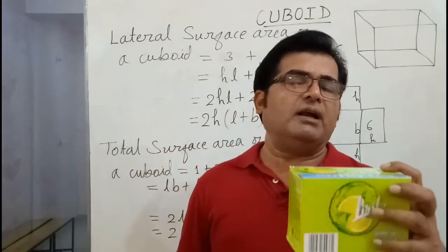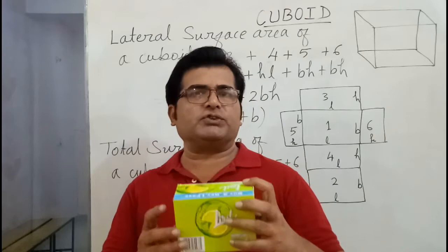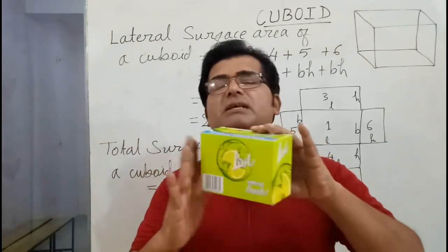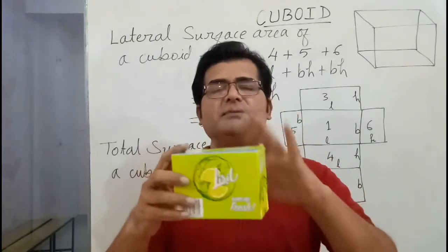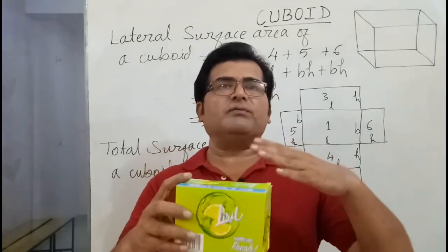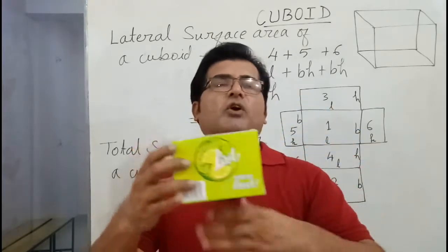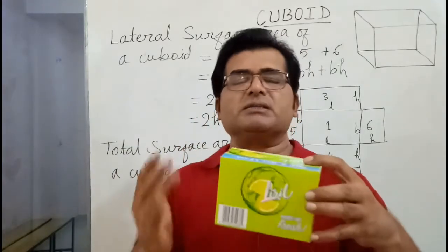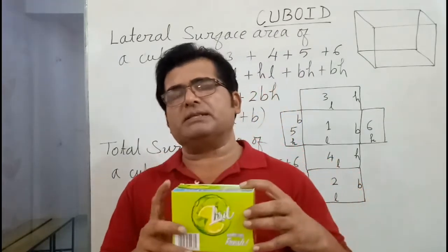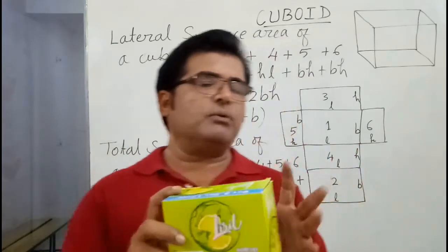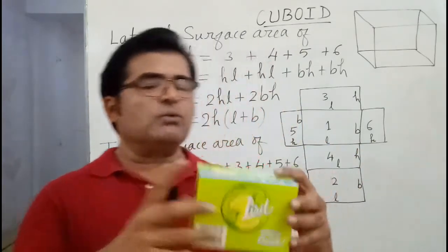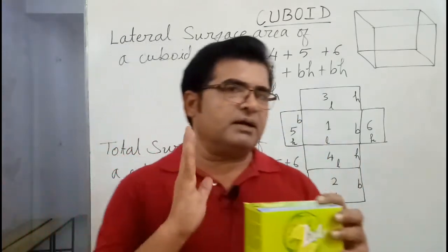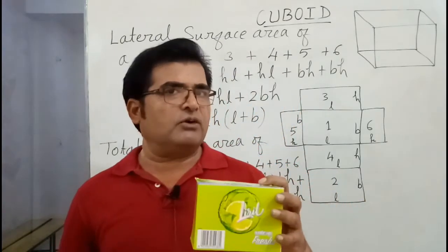If you have to find the lateral surface area of a cuboid, then first you should know what is lateral surface area. Lateral surface area means the side faces area. When you find that, which area will be left out? Top and bottom will be left out. So side faces are how many in number? Side faces are 4, so you have to find area of only 4 faces.